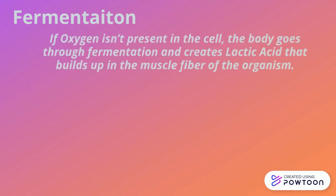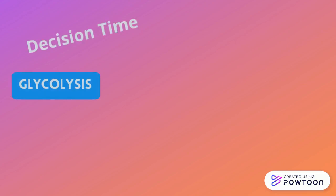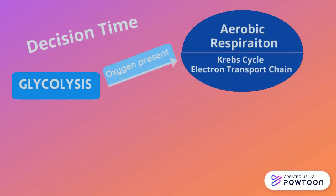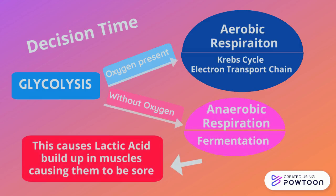If oxygen isn't present, the cell goes through fermentation and creates lactic acid that builds up in the muscle fibers of the organism. After glycolysis, the body must decide: if oxygen is present, aerobic respiration occurs — that's the Krebs cycle and electron transport chain. Without oxygen, anaerobic respiration occurs, which is fermentation. This causes lactic acid to build up in the muscles, causing them to be sore.